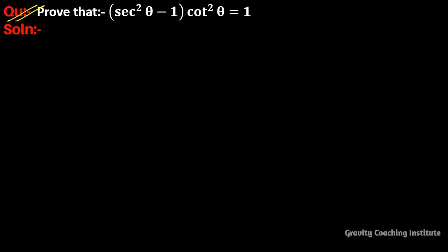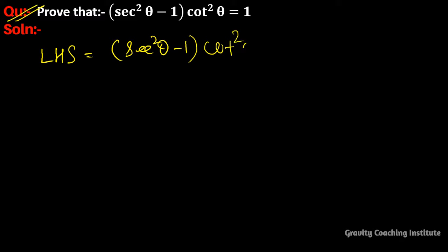Prove that (sec²θ - 1)·cot²θ = 1. We take the LHS, which is equal to (sec²θ - 1)·cot²θ, and we know the formula of sec²θ - 1.